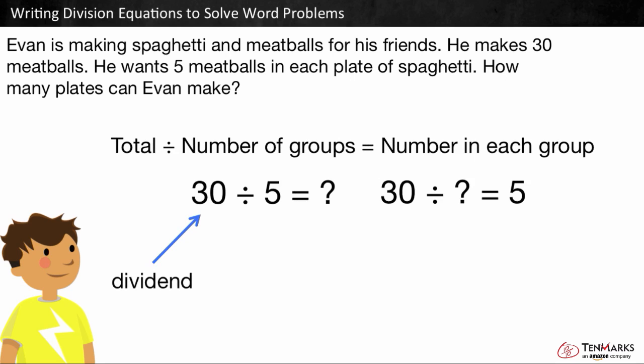30, or the total, is called the dividend. The number you are dividing by is called the divisor.